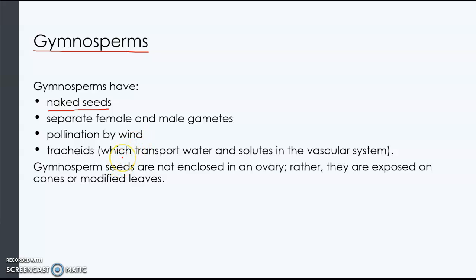The female and male gametes are separate. Pollination occurs, so the sperm — instead of containing flagella and swimming to the egg — is found within a pollen grain, and the wind carries it to the female gamete. Tracheids are part of the vascular system of gymnosperms, and they transport water and solutes. Gymnosperm seeds are not enclosed in an ovary or fruit; rather, they are exposed on cones or modified leaves.